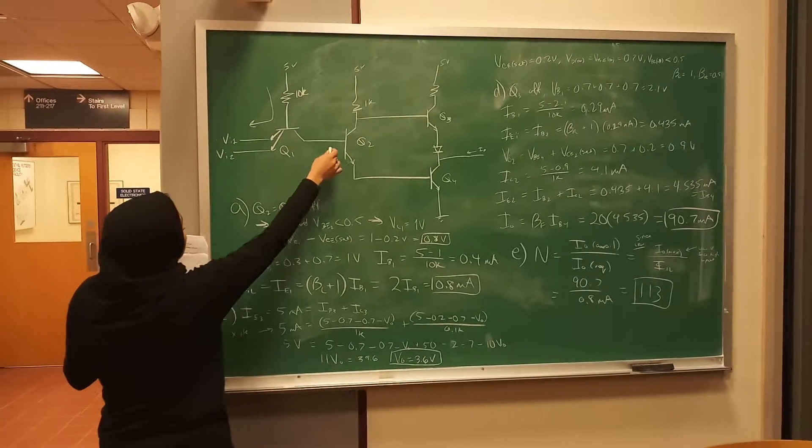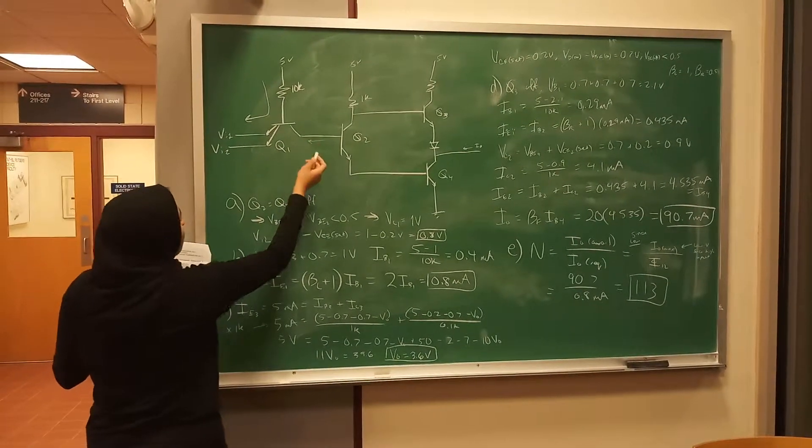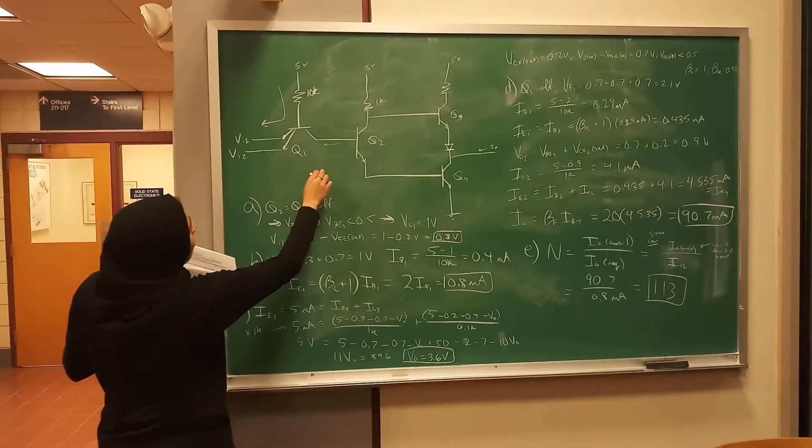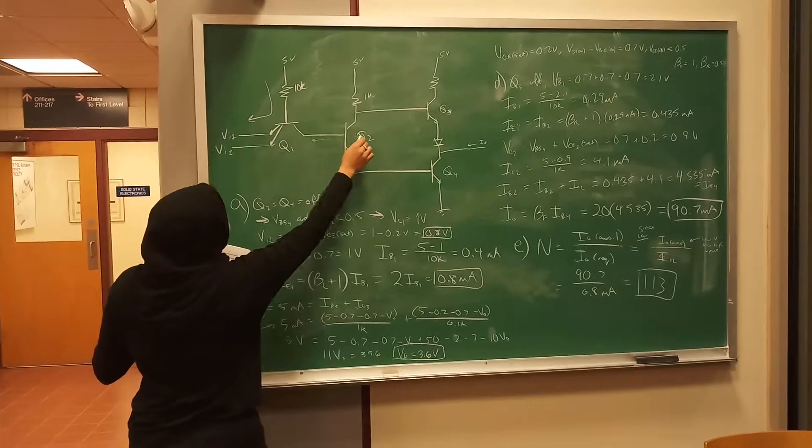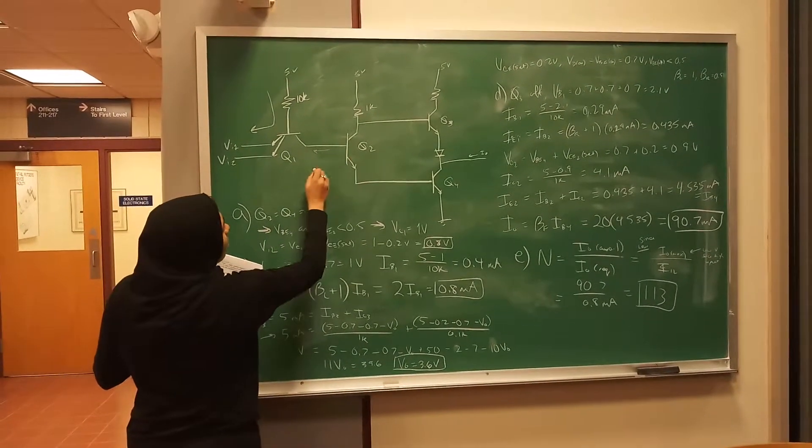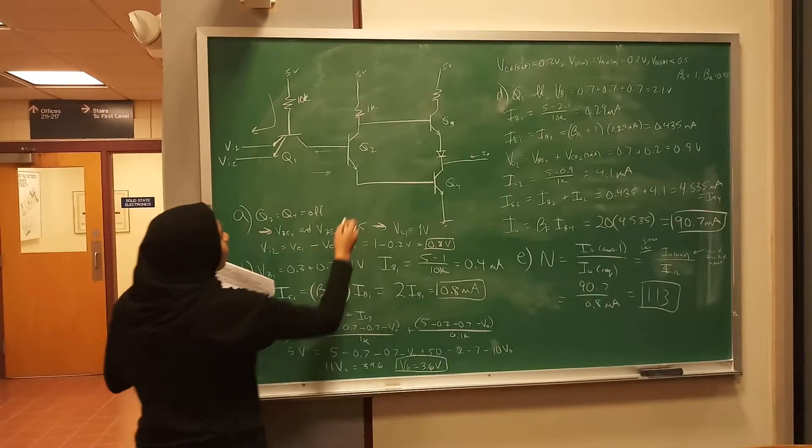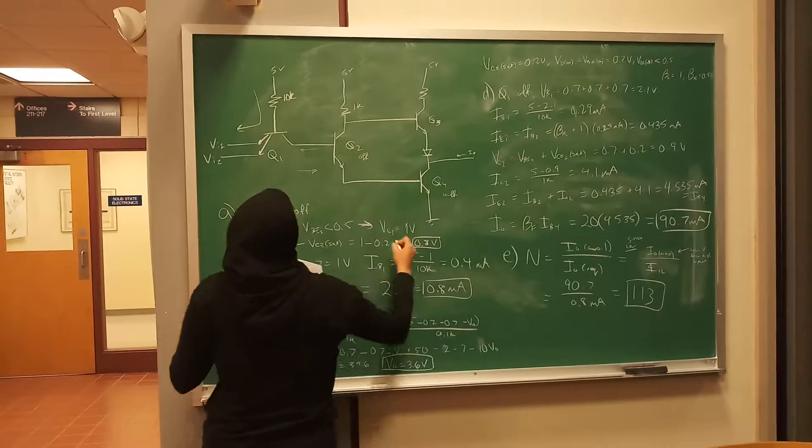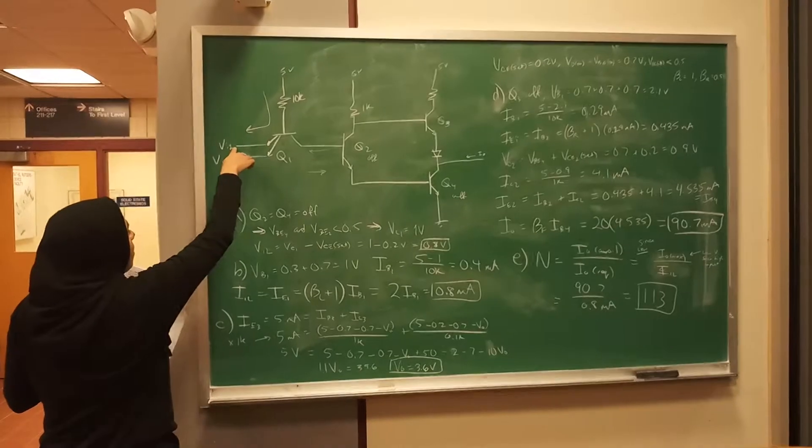Because even if this current is there for a regular transistor, because BJT operation happens this way, we can assume that this one is still going to be off because the current is going this way. The only way this is on is if the current is coming in this way. So we say this is off, this is also off, and all the current is flowing here.